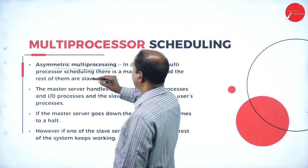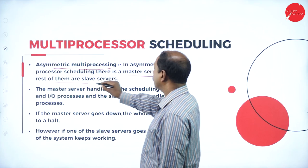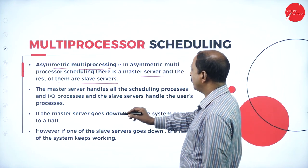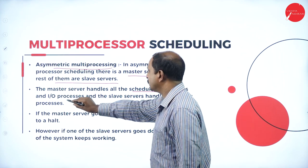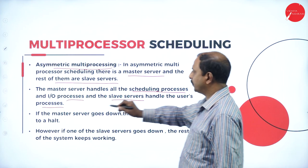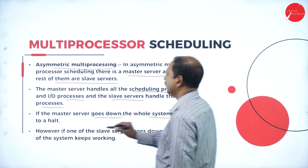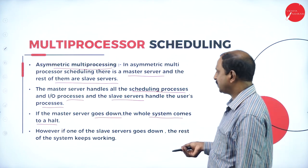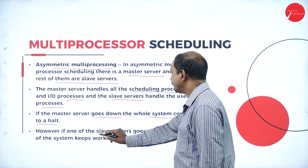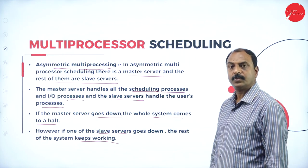In asymmetric multiprocessing, there is a master server and the rest are slave servers. The master server handles all the scheduling processes and IO processes, while slave servers handle the user processors. If the master server goes down, the whole system comes to a halt because everything depends on the master server. This is asymmetric multiprocessing scheduling.